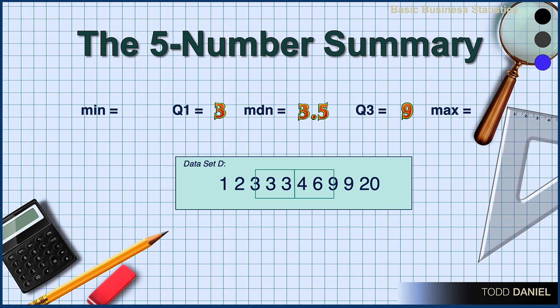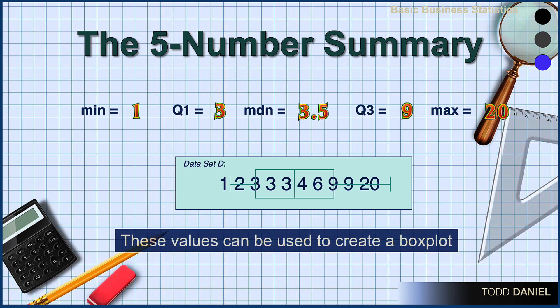The minimum value in this data set is 1, but the maximum value is an outlier — it is 20. As you can see, I've been adding something subtly in the background: these values can be used to create a box plot. The five-number summary and the box plot are showing us the same information. Let's drill down a little more about the qualities of that box plot.